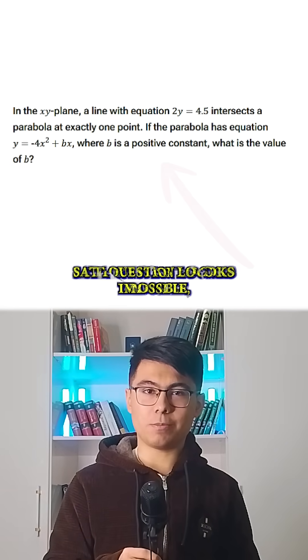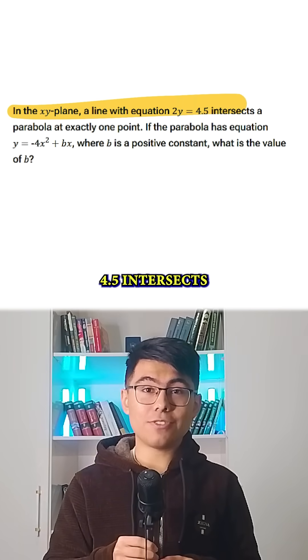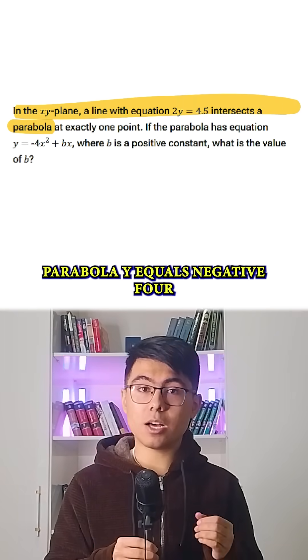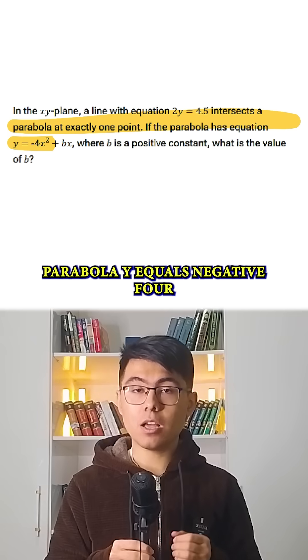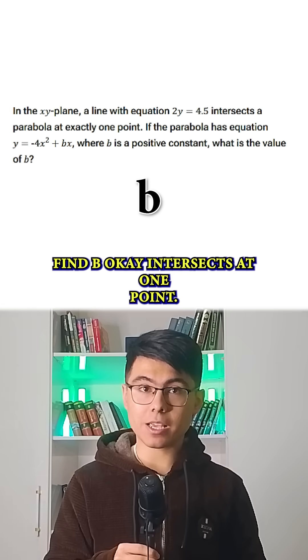This SAT question looks impossible, but there is a 10-second trick. It says line 2y = 4.5 intersects parabola y = -4x² + bx at exactly one point. Find b.